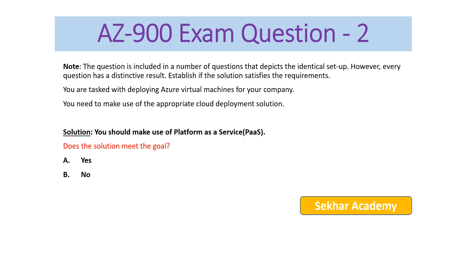AZ-900 exam question number two. The setup is the same as question one — you are tasked with deploying Azure virtual machines for your company and need to make use of the appropriate cloud deployment solution. However, the proposed solution here is different: you should make use of Platform as a Service (PaaS). Does the solution meet the goal?